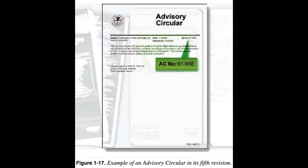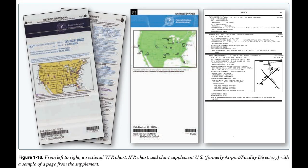Flight Publications. The FAA, in concert with other government agencies, orchestrates the publication and changes to publications that are key to safe flight. Pilot and Aeronautical Information: Notices to Airmen (NOTAMs). Notices to Airmen, or NOTAMs, are time-critical aeronautical information either temporary in nature or not sufficiently known in advance to permit publication on aeronautical charts or in other operational publications.